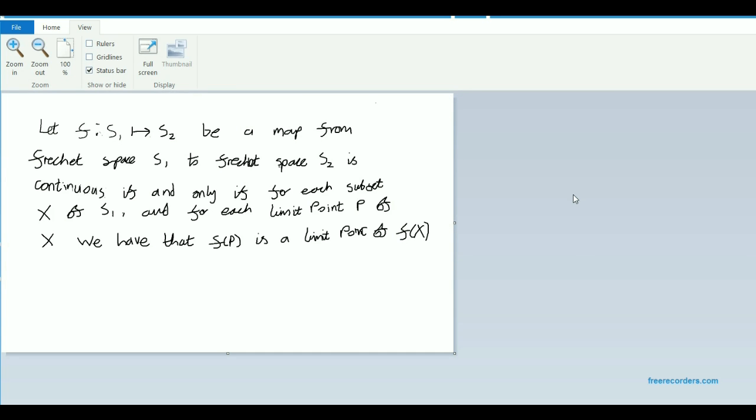and we take any limit point of that subset, then the image under F of that subset X which we chose, is going to have the property that the image F of P of that point that we chose, that original limit point,